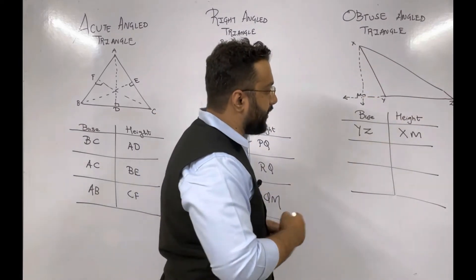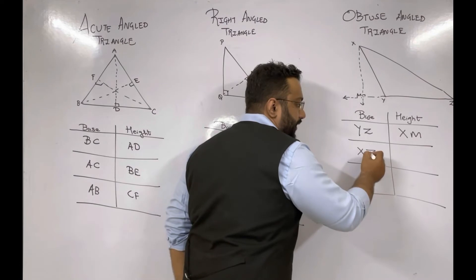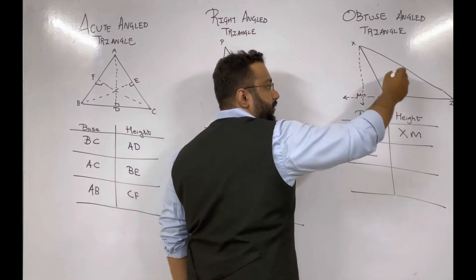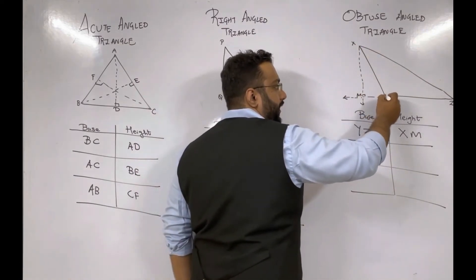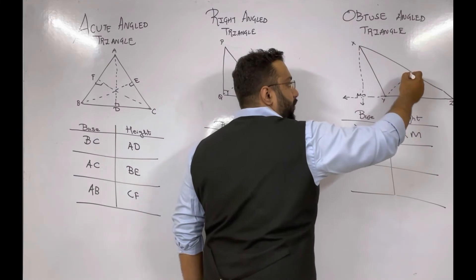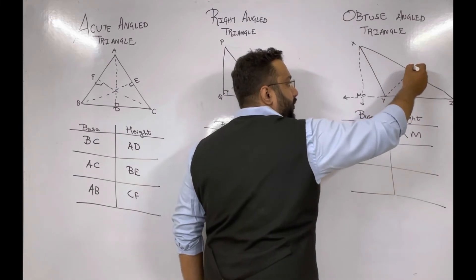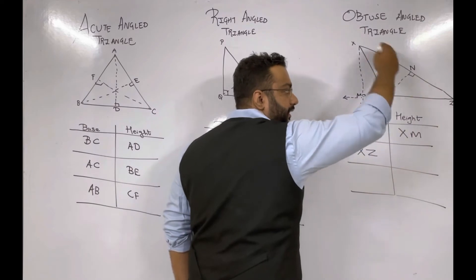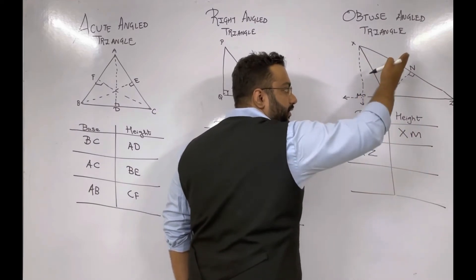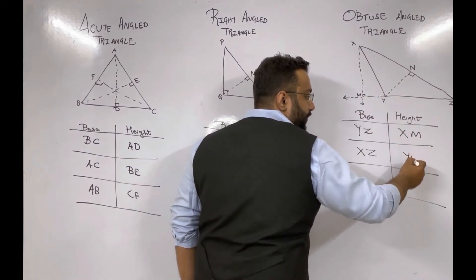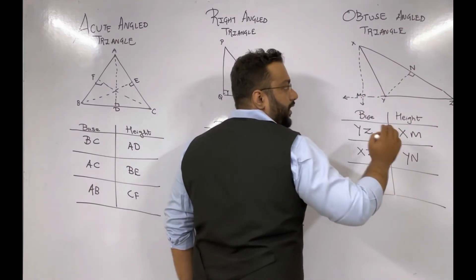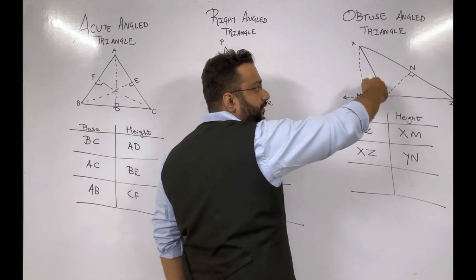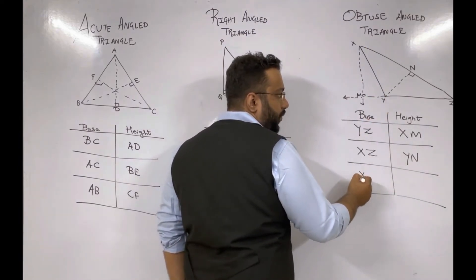If I take base as XZ in triangle XYZ, the opposite vertex is Y. The height starts from Y and we name the foot N. So for base XZ, the corresponding height is YN.